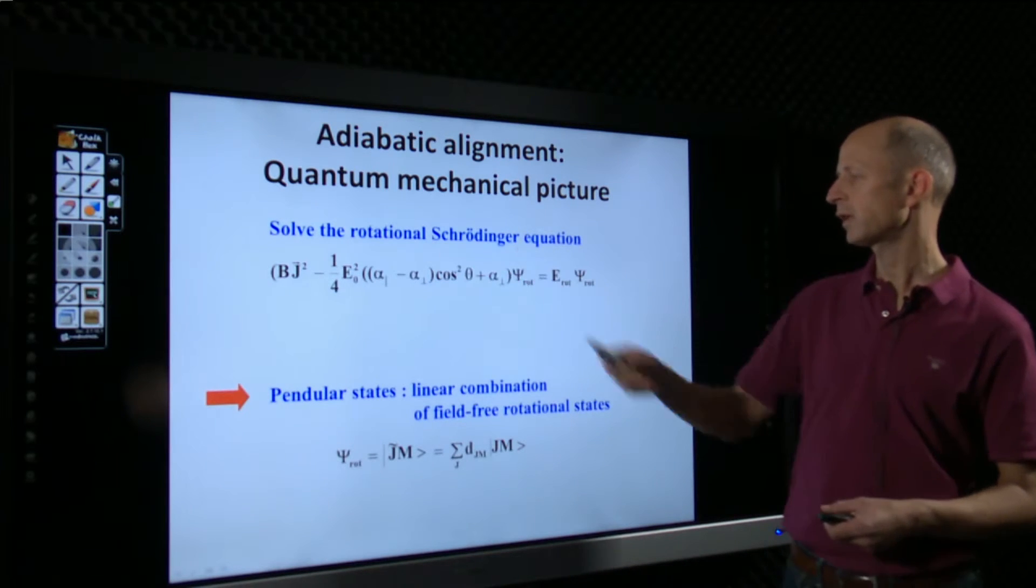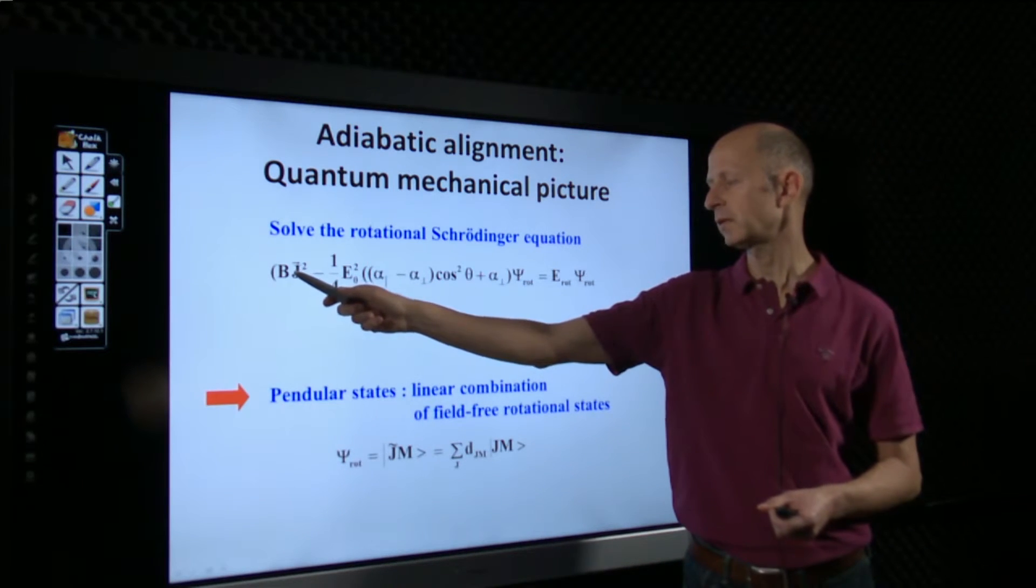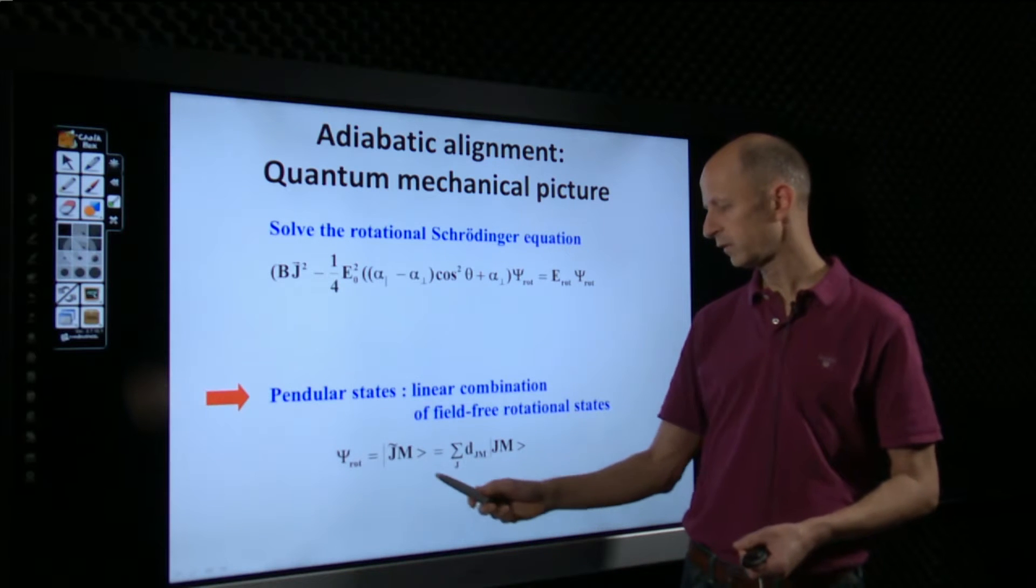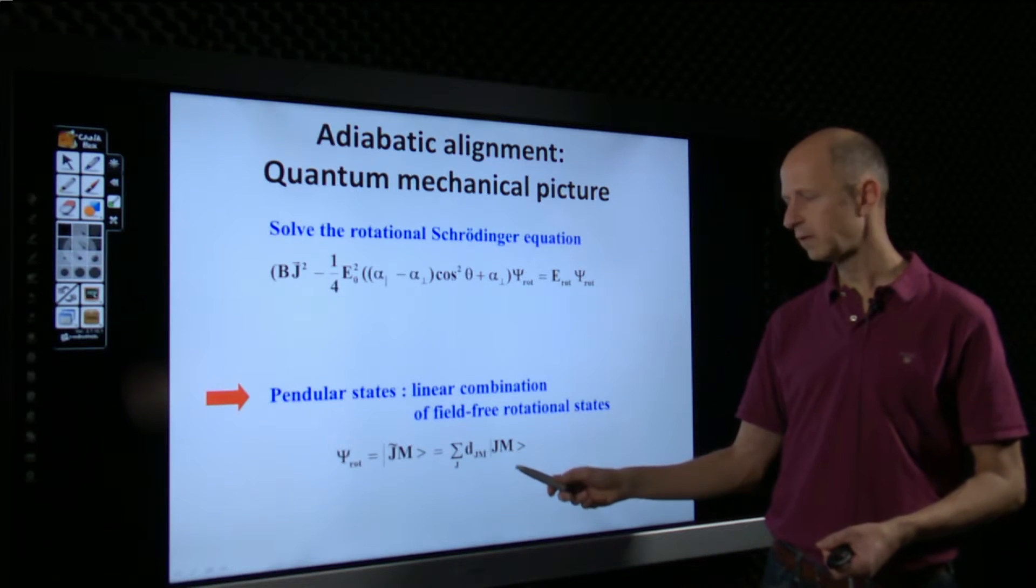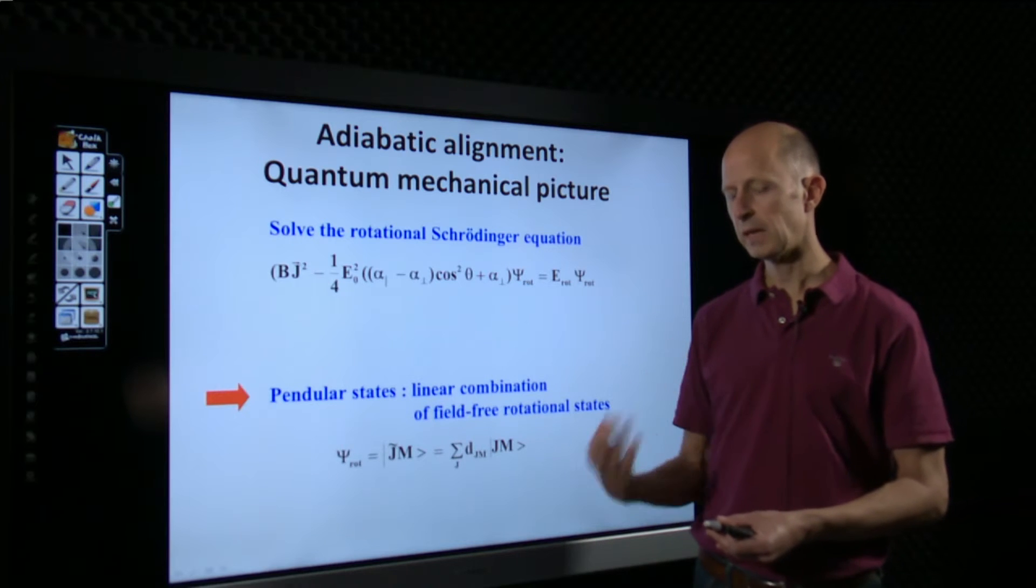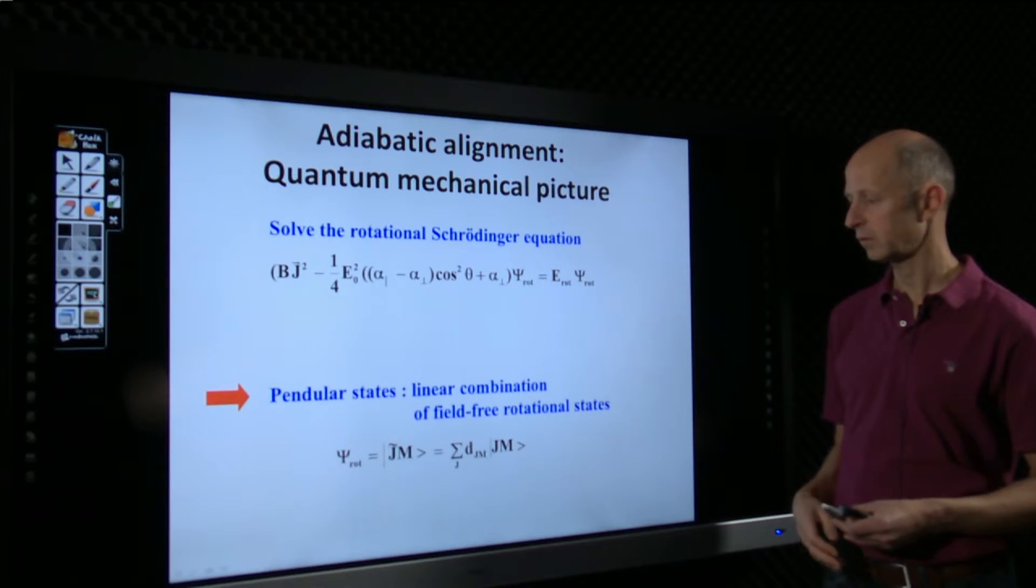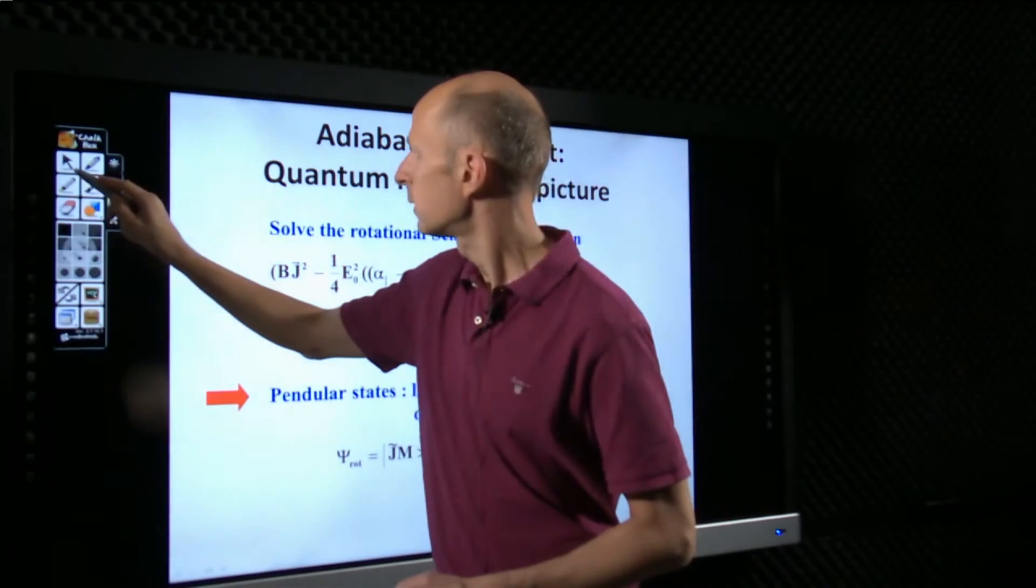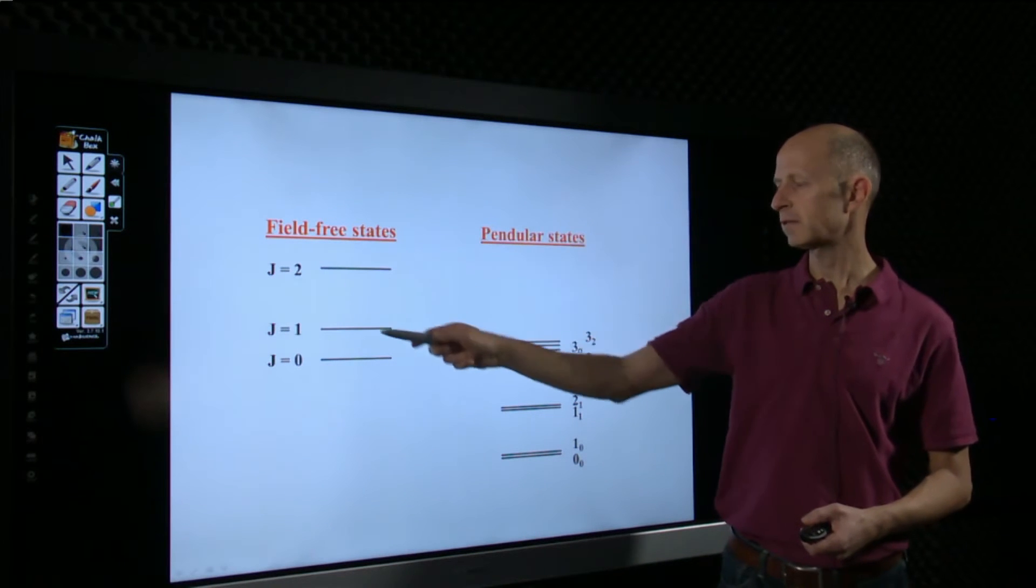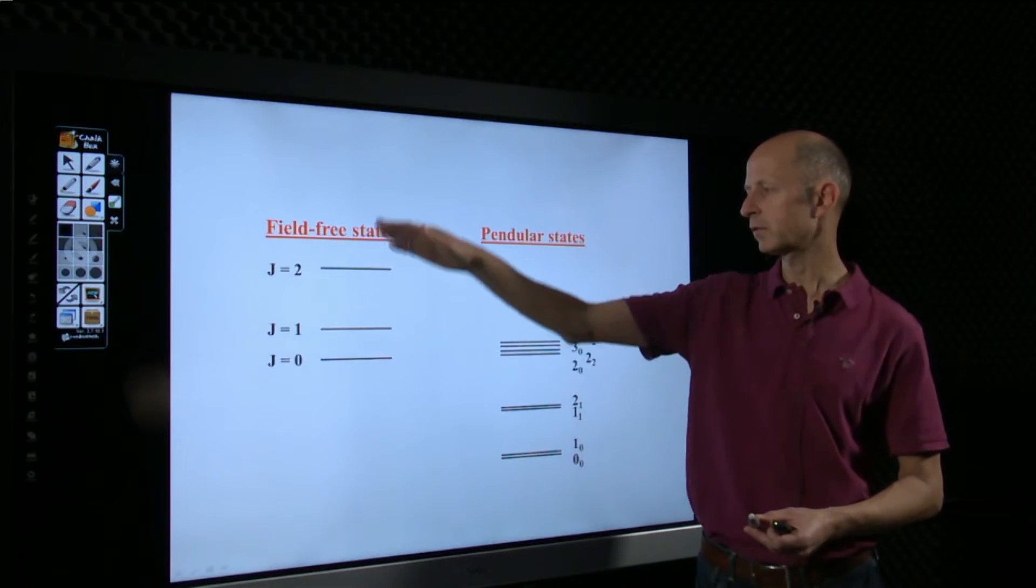There's a bit more to say, because let's look at the quantum mechanical version. So, quantum mechanically, you need to solve the rotational Schrödinger equation that's written here. So, this is the rotational energy, the kinetic energy, plus the interaction that you just saw. So, if you solve this, then you find that the solution can be expressed as a linear combination of field-free eigenstates. This is what we call pendular states. And this superposition basically ensures that you can confine the angle of the molecule. If you want to confine something quantum mechanically, you always have to build a superposition of states. That's what's done here.